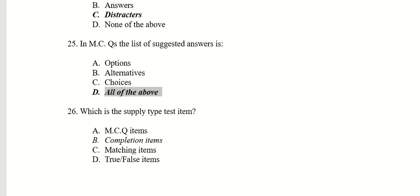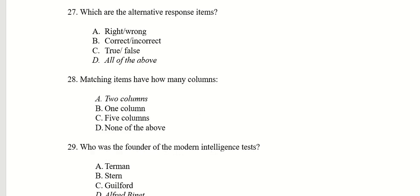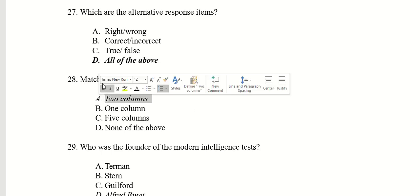Which is the slightest item? Completion items. What are the alternative responses items? All of above. Matching items have how many columns? Two columns.